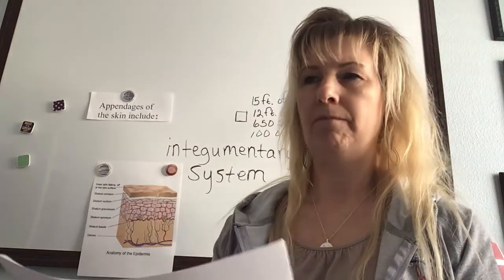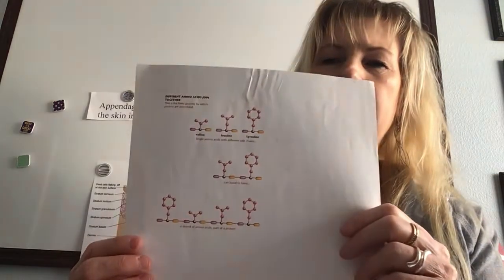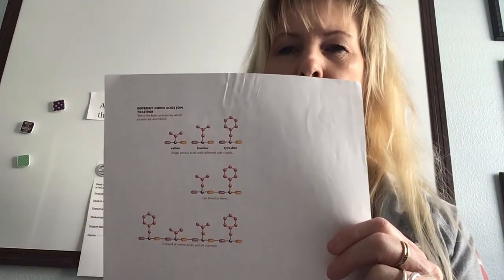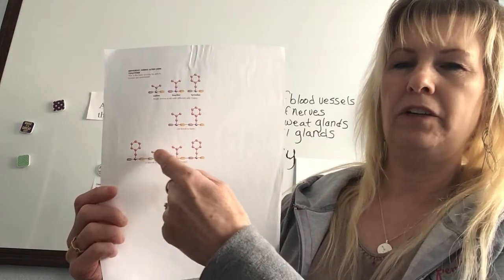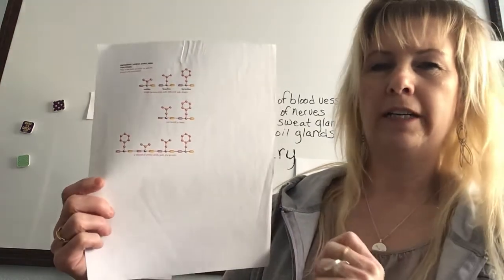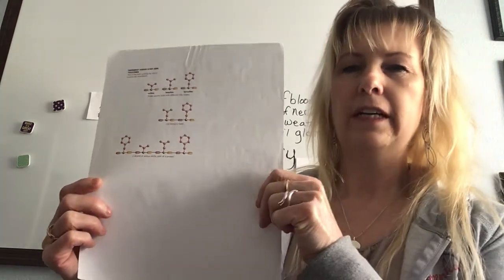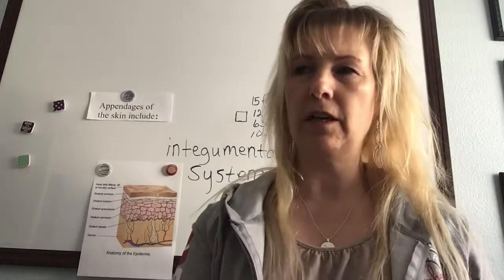Here we have three different amino acids: two have bonded to form a dipeptide, and then more join together — you can see all the different unique side chains or R-groups on each one. When you get enough of these together, it creates part of a protein. This is the primary structure of a protein — amino acids forming together through peptide bonds.